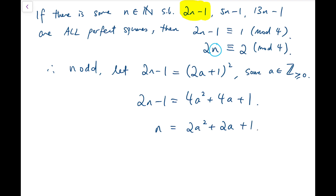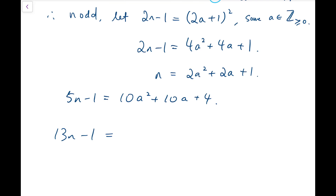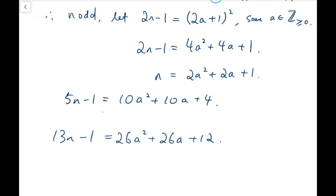Now with this expression, I can rewrite 5n-1 and 13n-1. We have already assumed that all three numbers are perfect squares. So 5n-1 — that particular expression must also be a perfect square — that is actually 10a² + 10a + 4, while 13n-1 equals 26a² + 26a + 12. And I'm going to further factorize just the first two terms, getting 10a(a+1) + 4, while the other one becomes 26a(a+1) + 12.